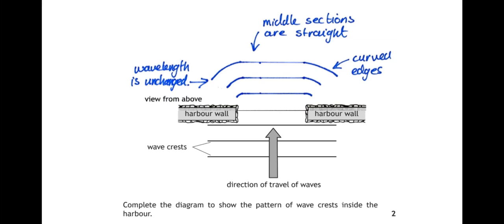There are three things we need to be aware of here. Firstly, the waves in the middle, the middle section that pass straight through the gap, they remain straight. The bits on either side, they curve around. The wavelength of the waves though, remains unchanged. So we should be able to draw it with a consistent distance between each of the waves.